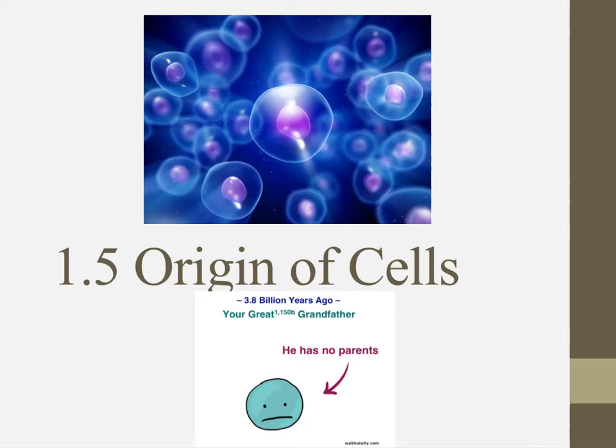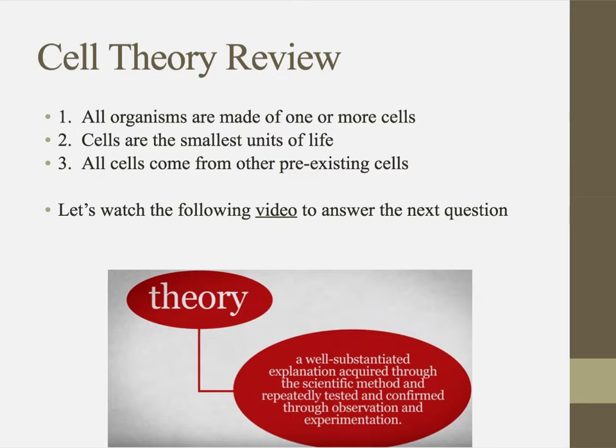Alright everybody, this video is going to help walk you through your notes on chapter 1.5, The Origin of Cells. Let's do a quick review of the cell theory. You should be prepared to list the three parts: all organisms are made of one or more cells, cells are the smallest units of life, and all cells come from pre-existing cells.